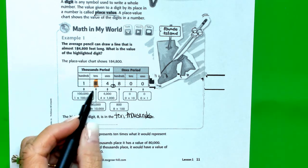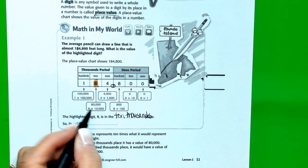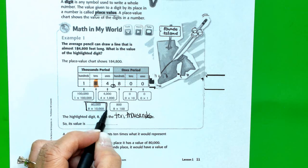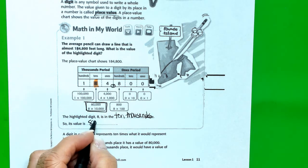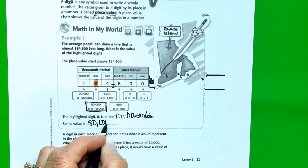So its value is, and you can see right here, its value is 8 times 10,000 or 80,000.